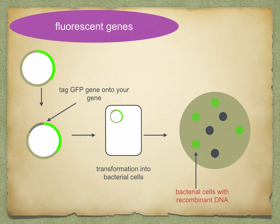Another option is to tag your gene with the green fluorescent protein, so that when your protein is translated, the green fluorescent protein will also be translated too. In this case, the cells that fluoresce will be the ones that have the recombinant DNA in them — opposite to the previous method.